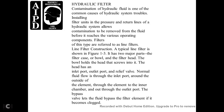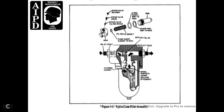Line Filter Construction. A typical line filter is shown in figure 1-3 with two major parts: the filter case bowl and filter head. The bowl screws into the head. The head contains the inlet port, outlet port, and relief valve. Normal fluid flow is through the inlet port, around the outside of the element, through the element to the inner chamber, and out through the outlet port. A bypass valve lets the fluid bypass the filter element if it becomes clogged.